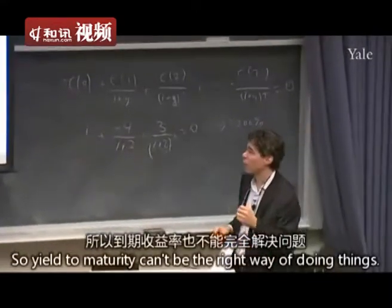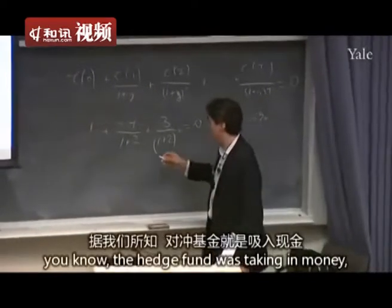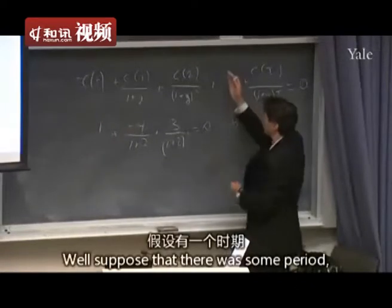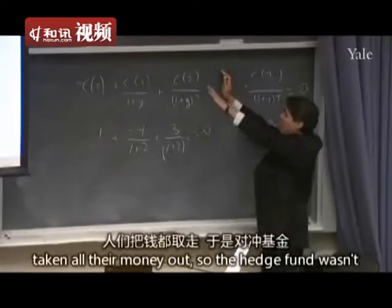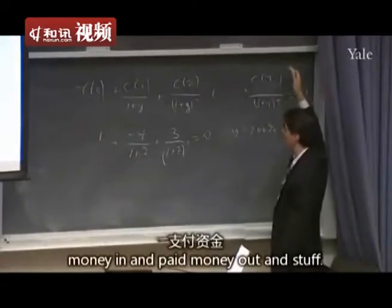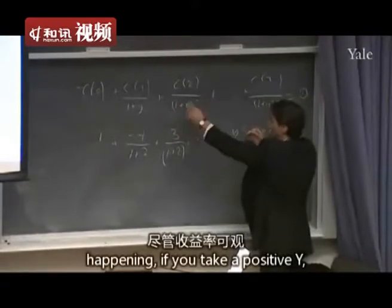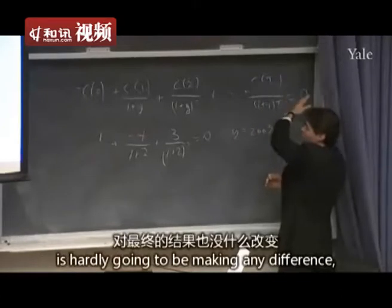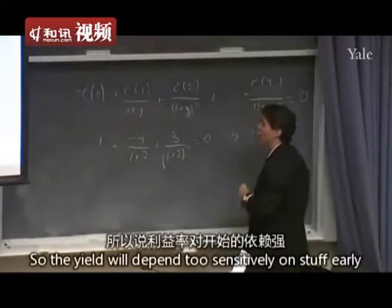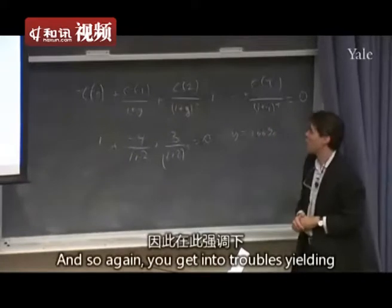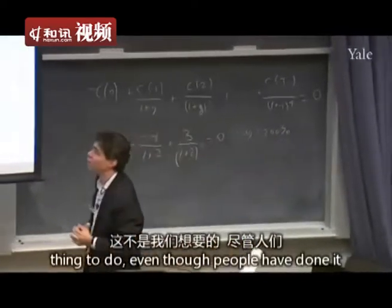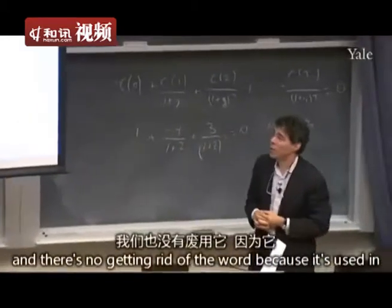Yield to maturity can't be the right way of doing things. Consider a hedge fund taking in and paying out money. If there was some period where everyone had taken all their money out — so nothing happened for a long time — and then the fund started up again, the yield will depend too sensitively on early cash flows rather than later ones, because later cash flows get discounted heavily. So yield to maturity gets you into trouble. But the word lives on in common vocabulary.